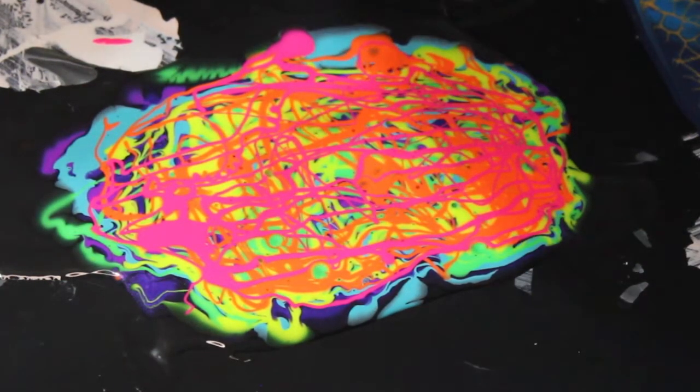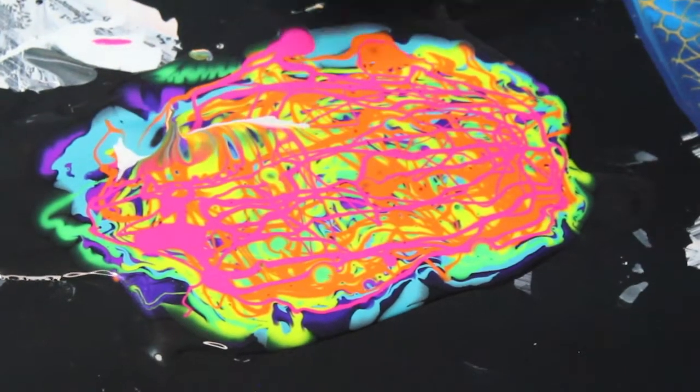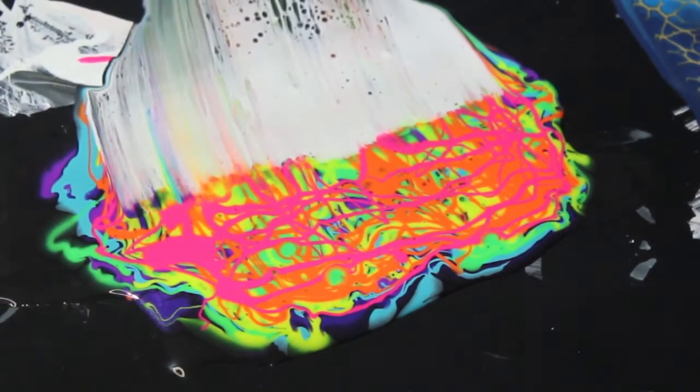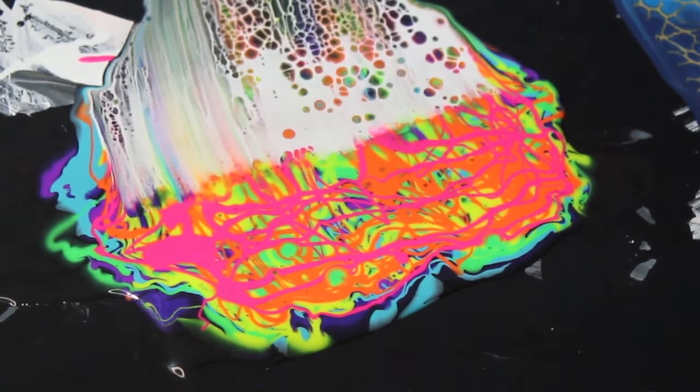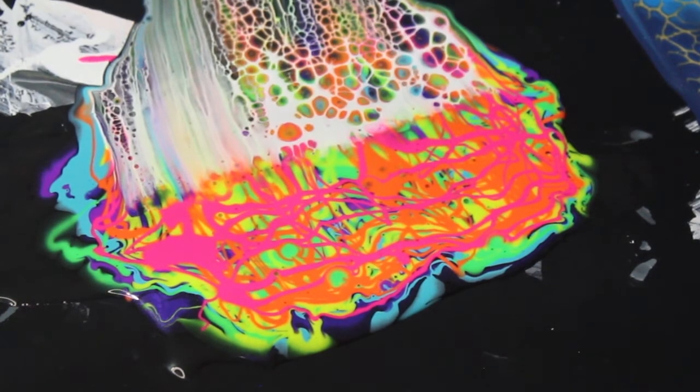What I'm doing right now is lightly blowing on top of the colors to try to pop the bubbles. I loaded out my paint tool with Amsterdam titanium white cell activator and look at those cells form.